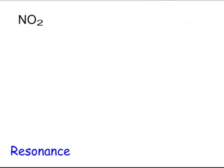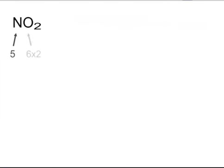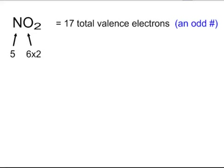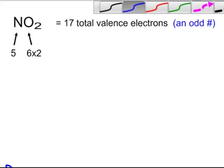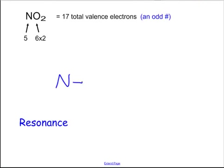Let me give you one more — nitrogen dioxide, NO2. Nitrogen has five and oxygen has six. Six times two is 12, plus five gives us 17. We have an odd number of electrons. Nitrogen goes in the middle, and we fill the oxygens with octets. Oxygen has eight; oxygen has eight — that's 16. We have 17 total, which means we only have one leftover electron to put on that nitrogen.